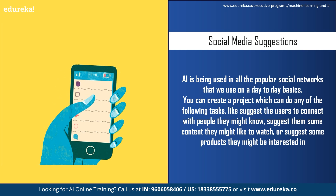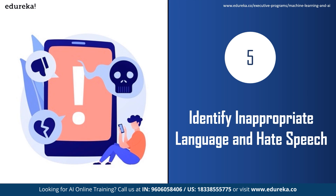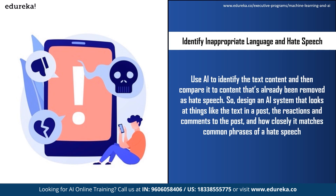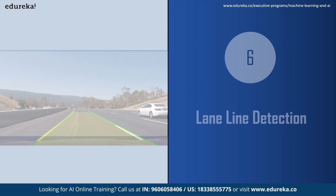The next project is identifying inappropriate language and hate speech. This sounds easy but is quite hard — companies like Facebook, Twitter, and YouTube are trying to build such systems. You can use detection techniques that identify characters in context and compare them to content already removed as hate speech. Design an AI system that looks at the text, reactions, and comments of a post, checks how closely it matches common hate speech phrases, and identifies and reports inappropriate words.